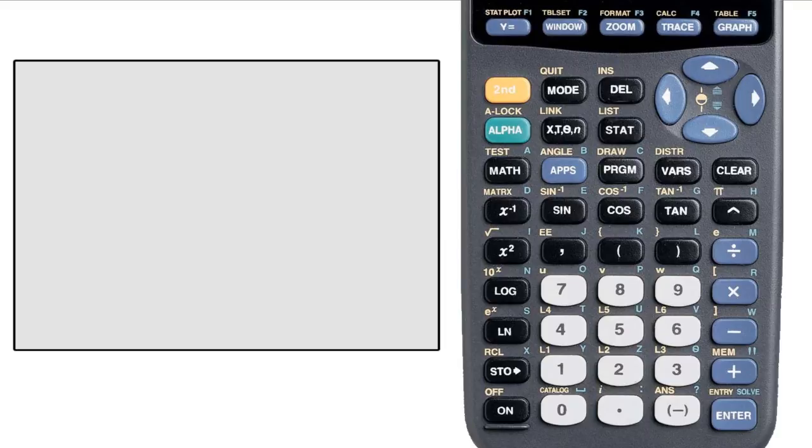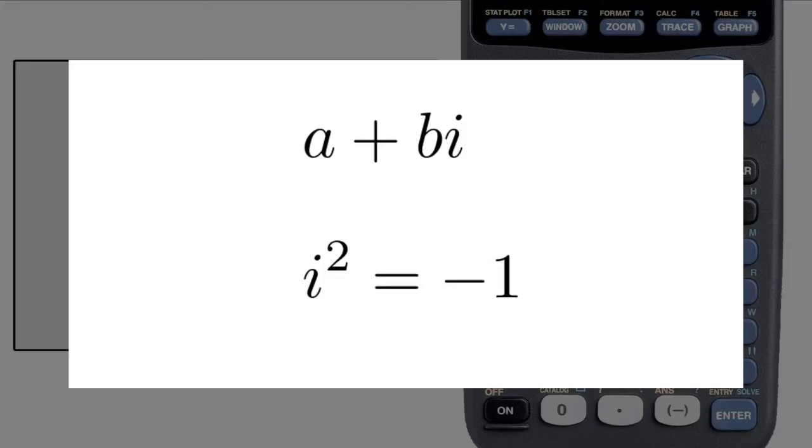I'm not going to completely recap everything about complex arithmetic, because that's something to be learned in the actual class. But remember that a complex number is a number of the form A plus BI, where I squared is negative one.